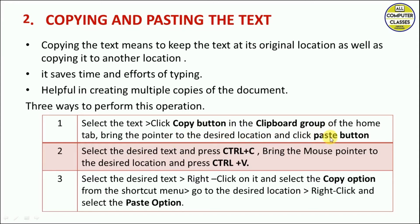First method: click the Copy button in the Clipboard group on the Home tab, move the mouse pointer to the paste location, and click Paste. Second method: select the text, press Ctrl+C, go to the desired location, and press Ctrl+V. Third method: select the text, right-click, choose Copy, go to the desired location, right-click again, and select Paste.